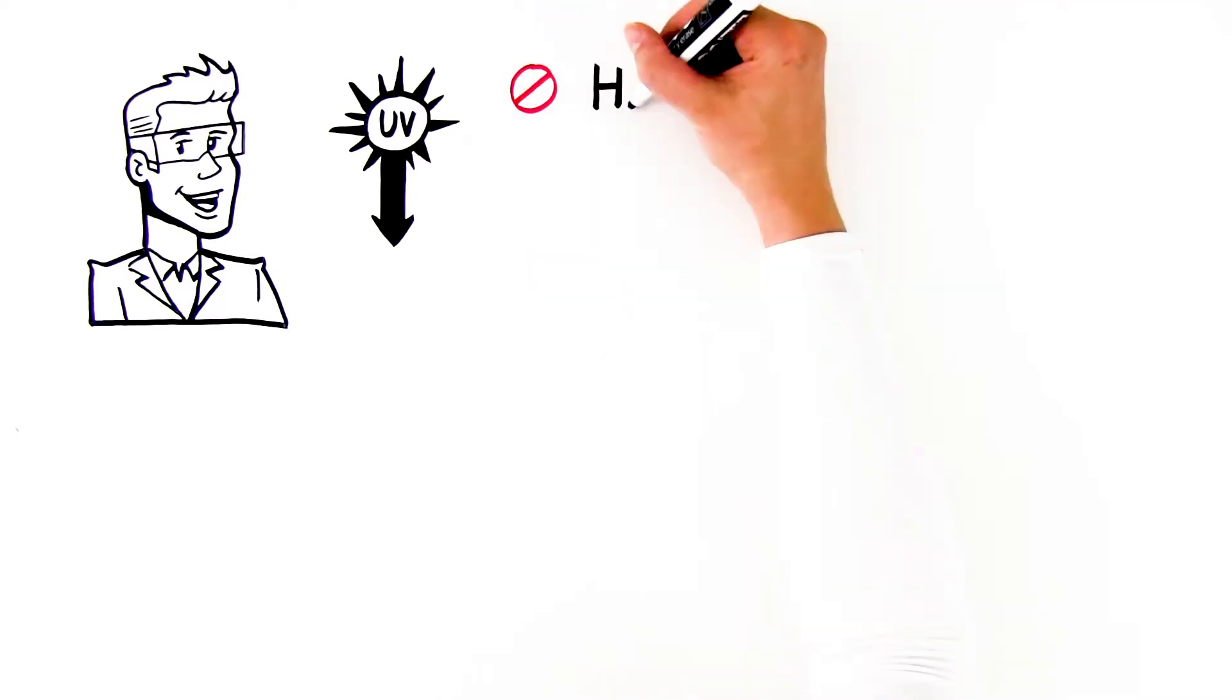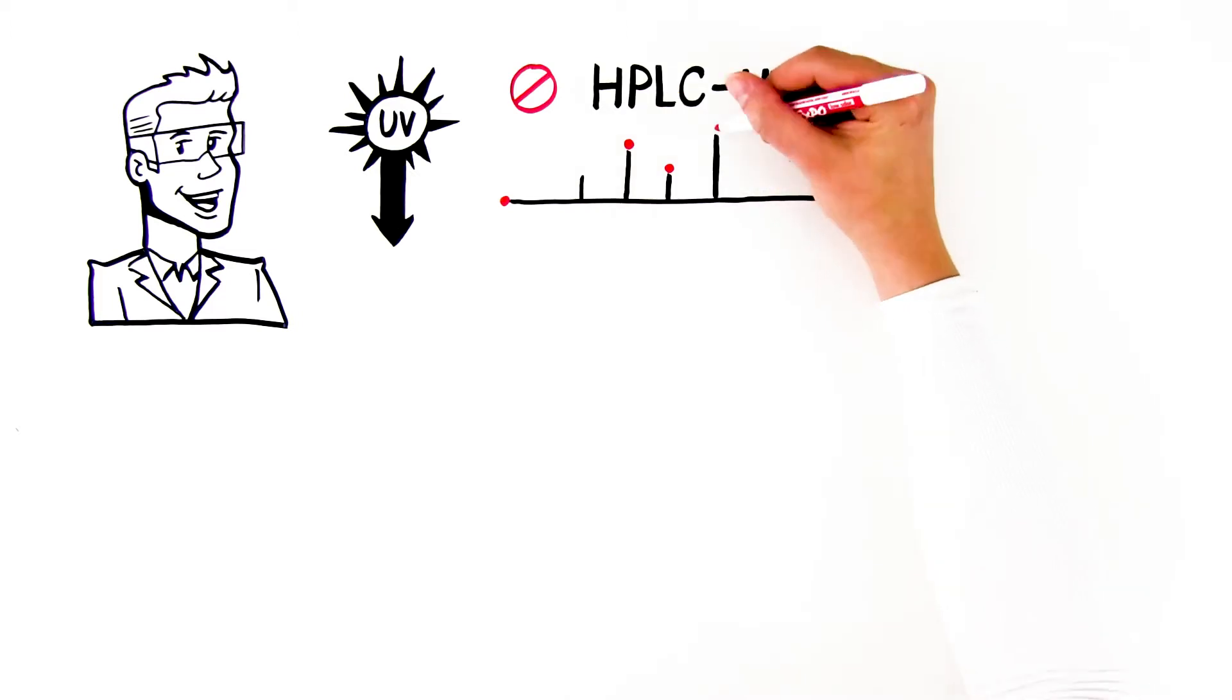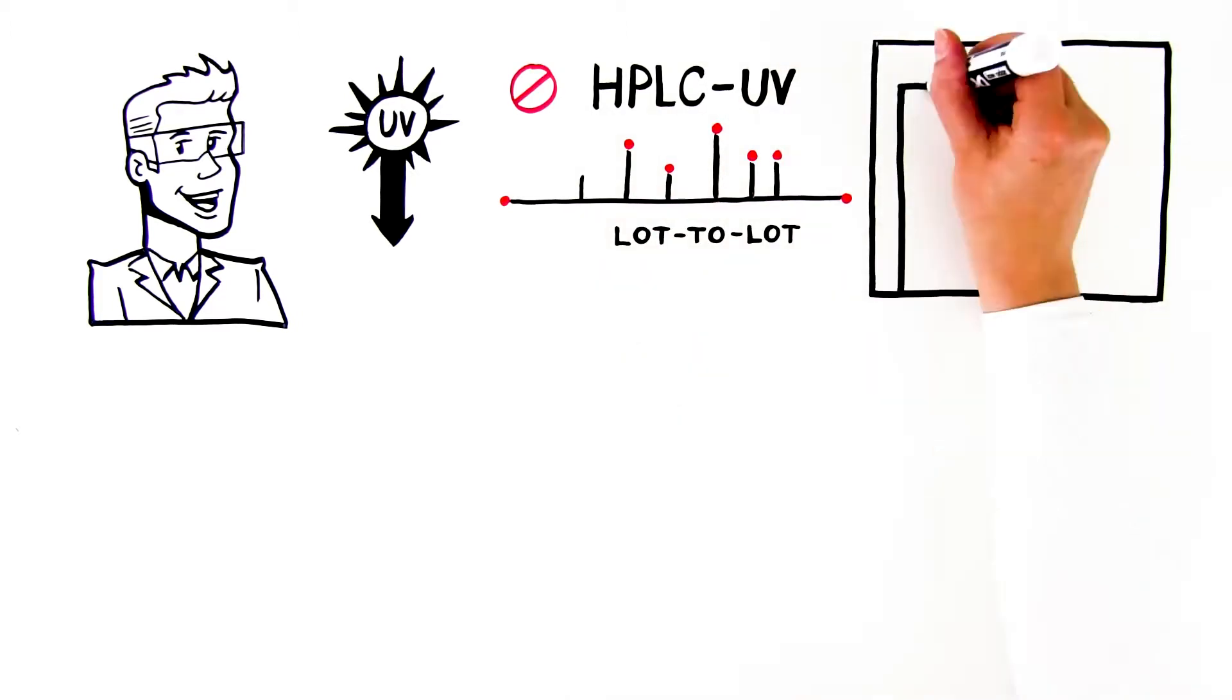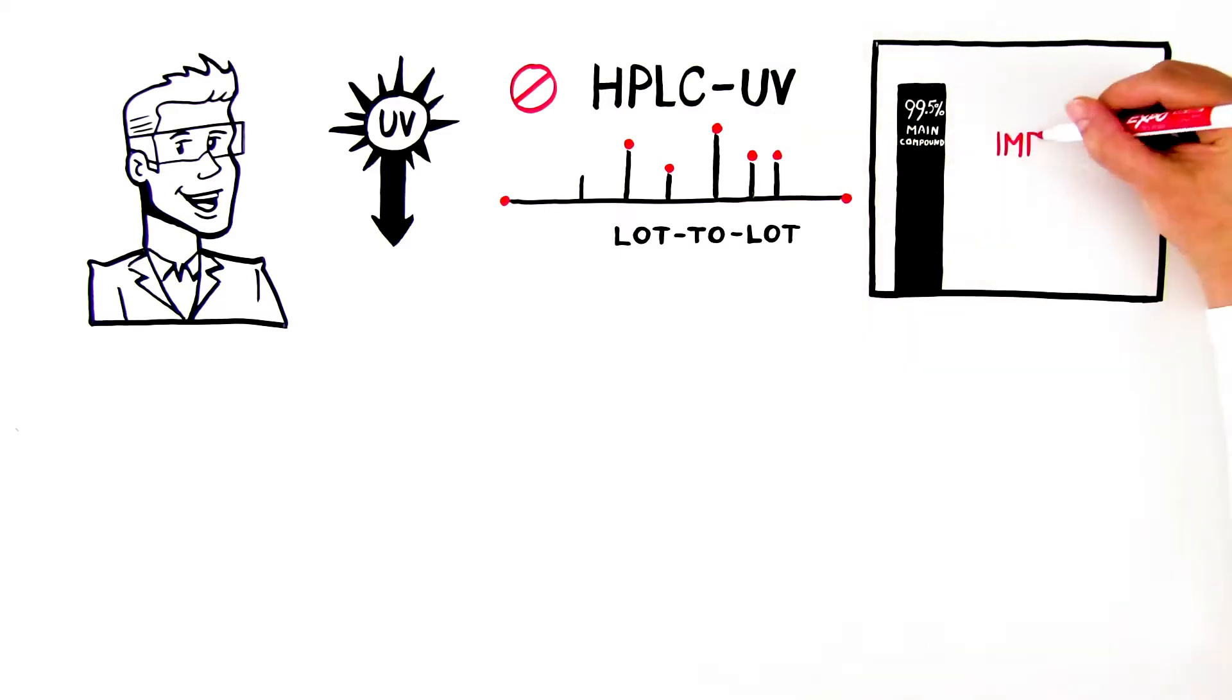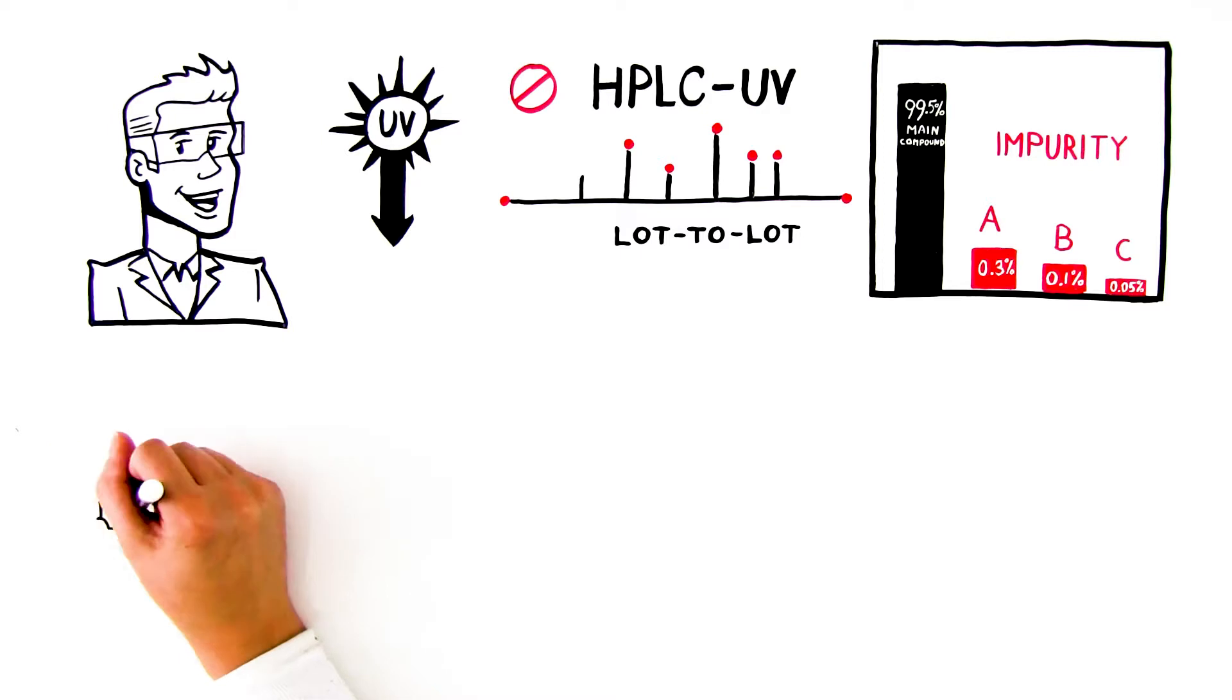This renders traditional HPLC UV methods insufficient for quantifying the excipient or determining product quality, like tracking lot-to-lot variability during manufacture or monitoring the levels of impurities and degradation products.